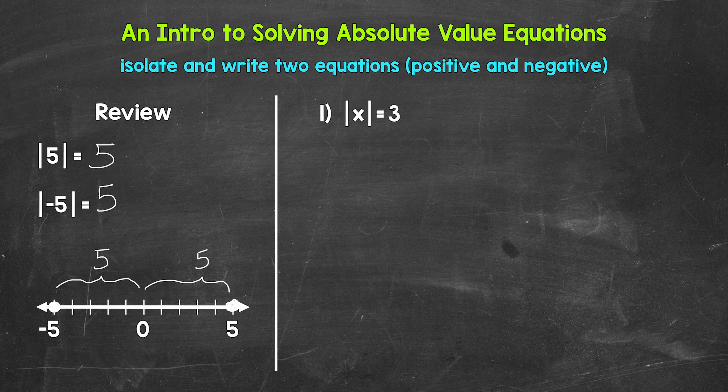For the absolute value of x equals three, we have two possibilities — two solutions. The absolute value of positive three equals three, and the absolute value of negative three equals three. Both of those work. So imagine having three or negative three here for x. Both of those are solutions. They both equal three.